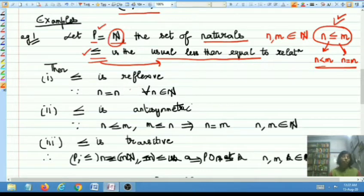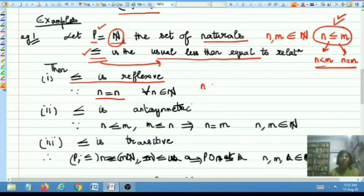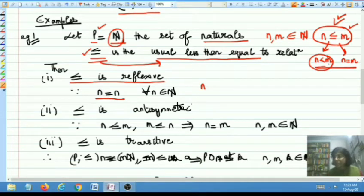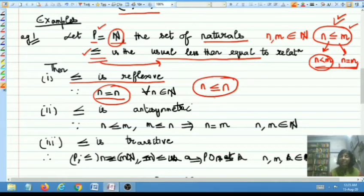You can verify all three properties one by one. First of all, less than or equal to is reflexive. Why? Because every natural number N is equal to itself. We have defined that two natural numbers will be related if one is strictly less than the other or they are equal. Because the condition of equality is satisfied by all natural numbers, every natural number N is related to itself. So reflexivity is satisfied for all elements of the underlying set.